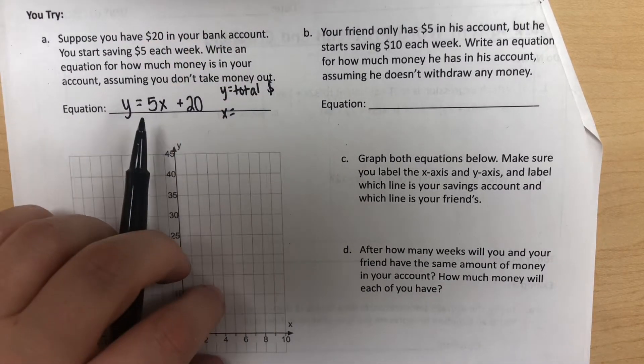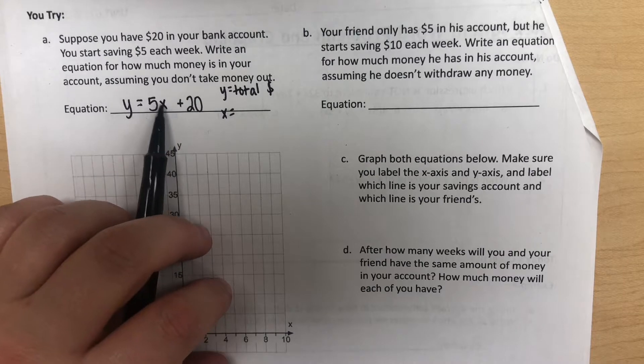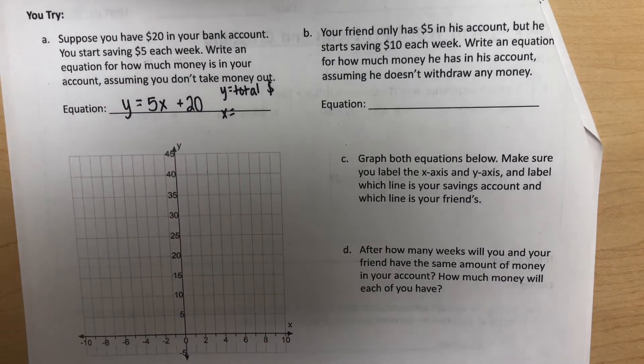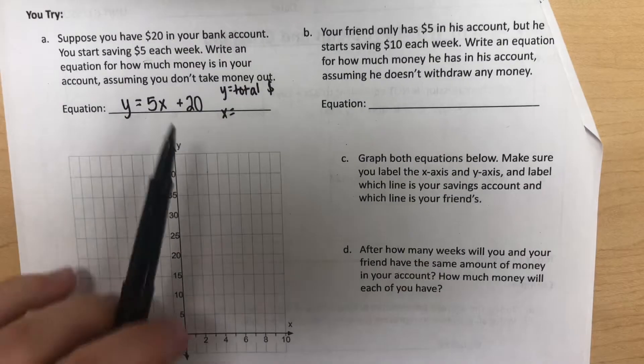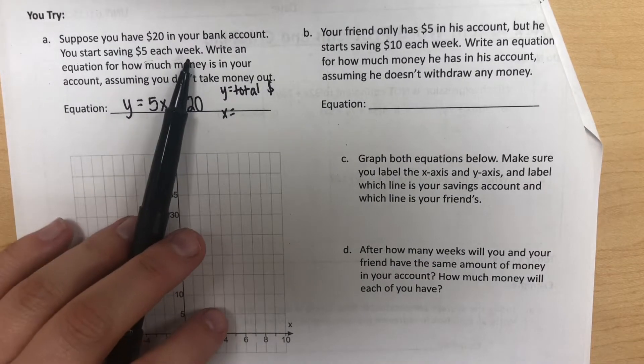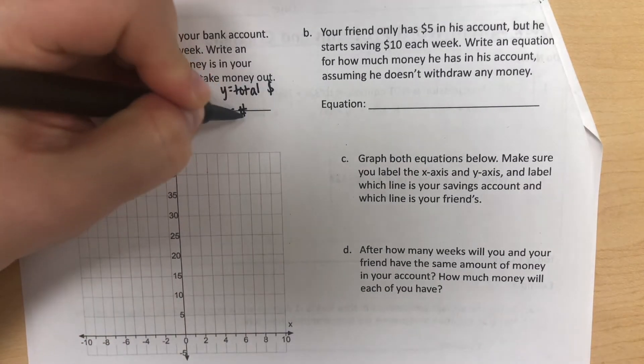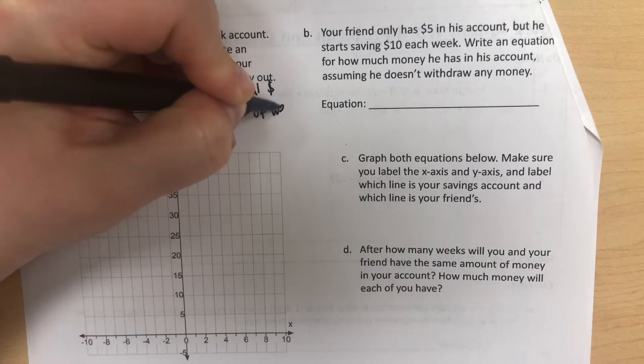Y would represent the total money in the account. And then X—it might be tempting to say X is how much money you save each week, but that's something we know. We know it's $5 each week. What we don't know is how many weeks they've been saving, so X would represent the number of weeks.